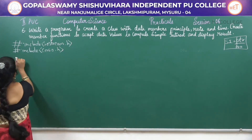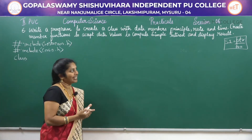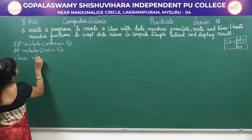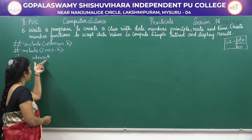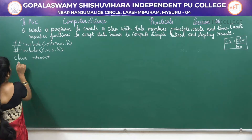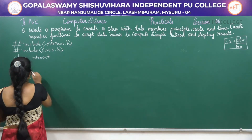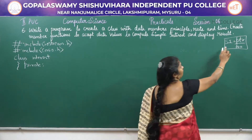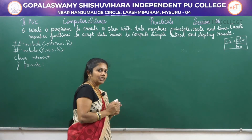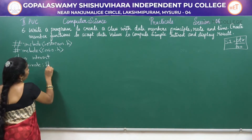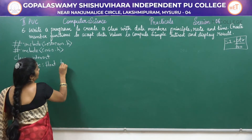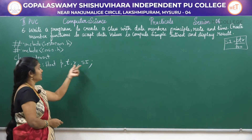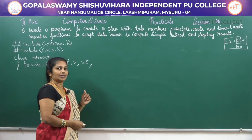Now we will start with the class. We want to find simple interest for the given principal amount, rate, and time. The class name we are giving is 'interest'. In the private section, declare the variables. We declare all variables as float format: float P, T, R, and SI to store the result.